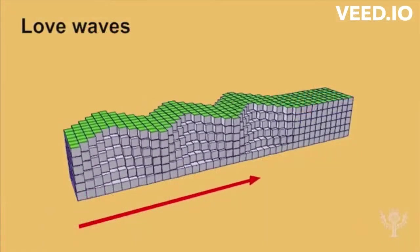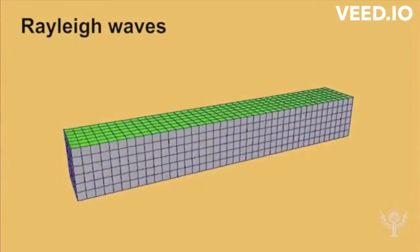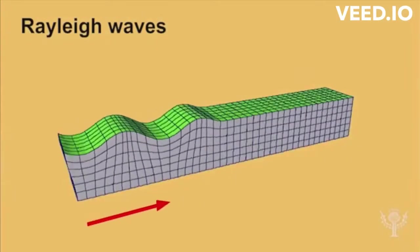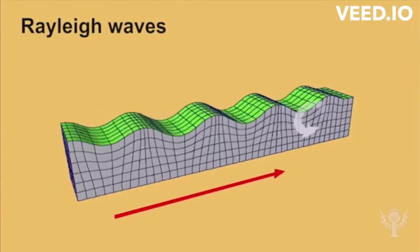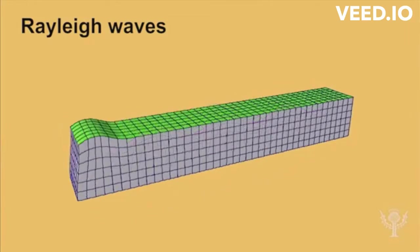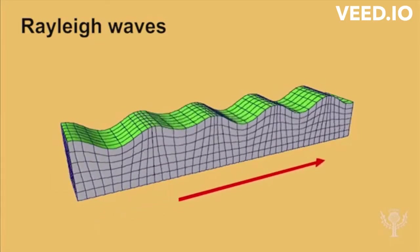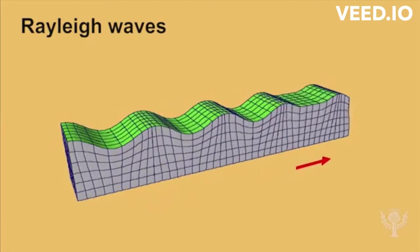Love waves are polarized shear waves with particle motion parallel to the free surface and perpendicular to the direction of wave propagation. Rayleigh waves propagate along a free surface or along the boundary between two dissimilar solid media, the associated particle motion being elliptical in a plane perpendicular to the surface and containing the direction of propagation.